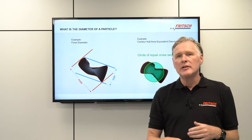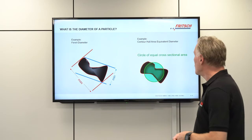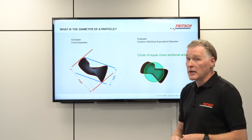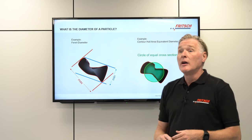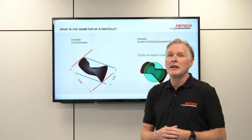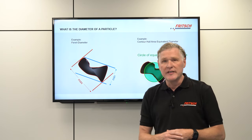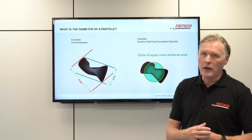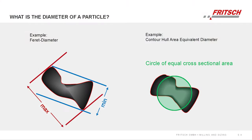On the right hand side, another definition: the so-called contour hull area equivalent diameter. Here we take the cross-section area of the particle and calculate the diameter of a circle with an equal area. Of course there are more definitions of the term diameter, and we always need to keep in mind what the actual definition is that we currently use for our measurement.